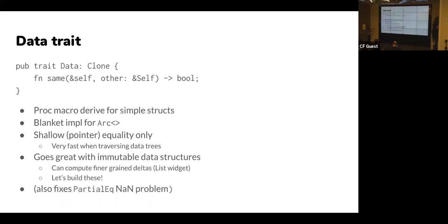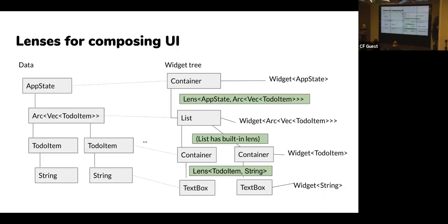One minor point: PartialEq has a problem with NaNs — no two NaNs can ever be equal to each other, but two NaNs can be the same. The Data trait handles that correctly. Traversing the widget hierarchy and propagating app state changes can be slow if done naively — every change propagates down the entire widget tree. The solution we came up with is lenses.